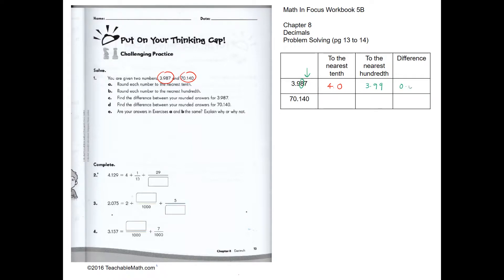The difference is 0.01. Next, to the nearest tenth: we look at the next place value, which is the hundredths. Since 4 is less than 5, the answer is 70.1. For the nearest hundredth, look at the next value — it is 0, which is less than 5 — so it is 70.14.